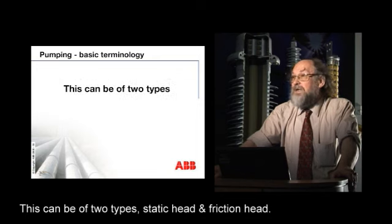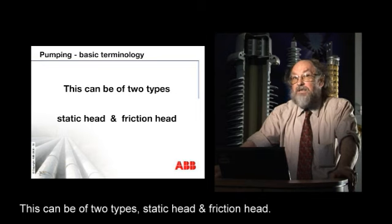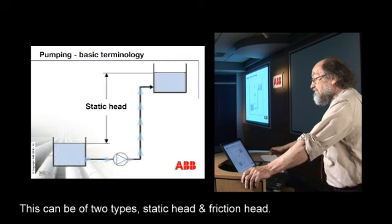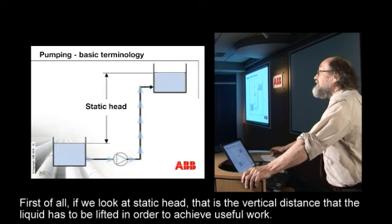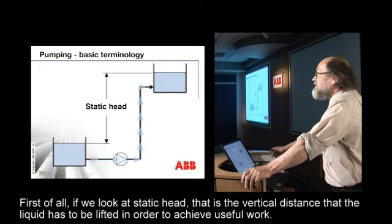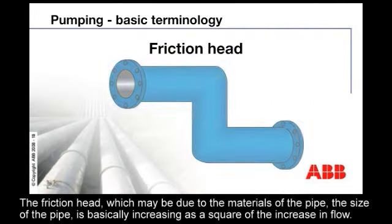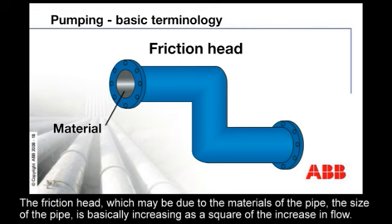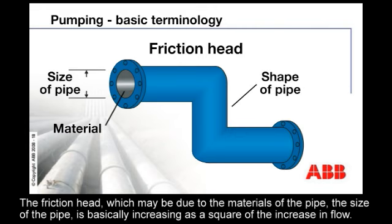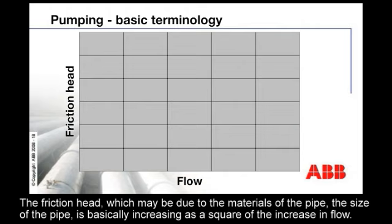This can be of two types: the static head and the friction head. The static head is the vertical distance that the liquid has to be lifted in order to achieve useful work. The friction head, which may be due to the materials of the pipe or the size of the pipe, increases as a square of the increase in flow.